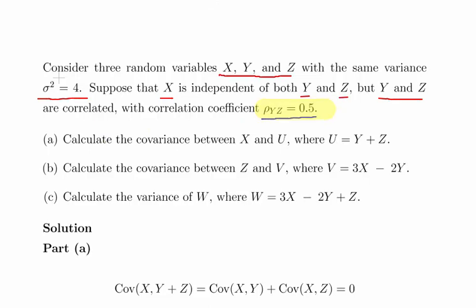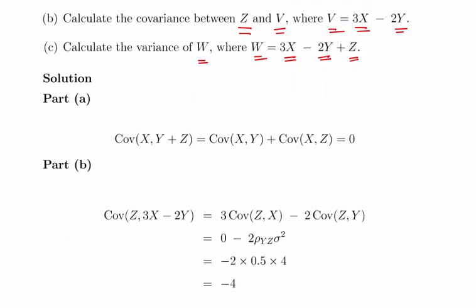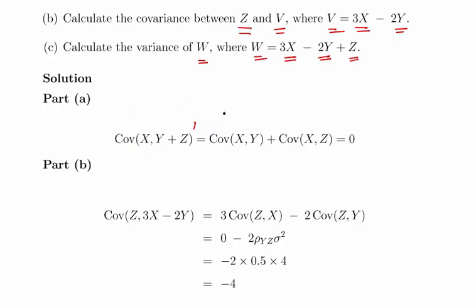We have three questions. First, calculate the covariance between y and u, where u equals y plus z. Second, calculate the covariance of z and v, where v equals 3x minus 2y. Third, calculate the variance of w, where w equals 3x minus 2y plus z. Now for the first question, we're asked for the covariance of x and u, where u equals y plus z — so essentially the covariance of x and y plus z.